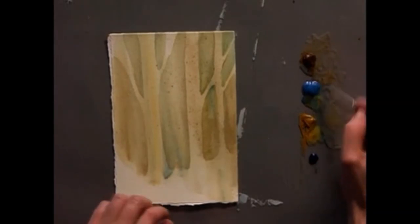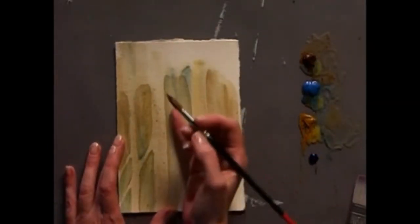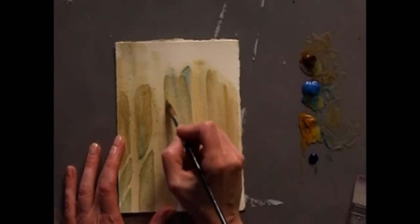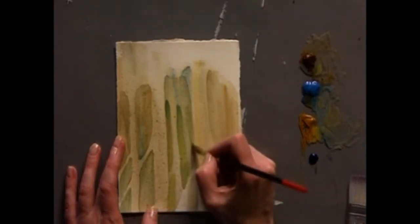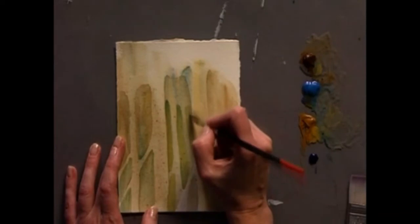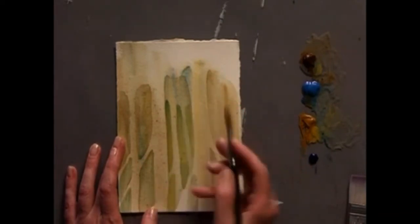I'll use the same colors again and start my next layer of trees. This is going to be a little darker as we move into the distance and I'll paint out, carving out the next tree. You want to make sure you include a lot of different widths of your trees.